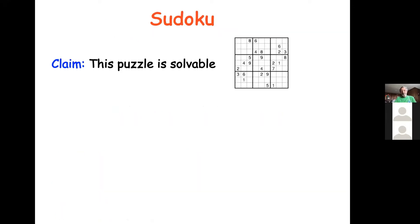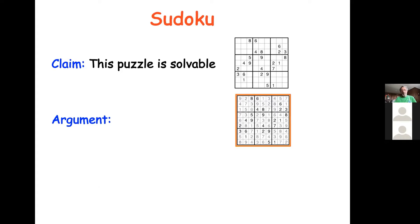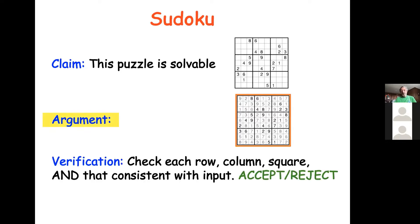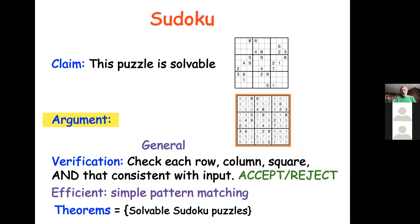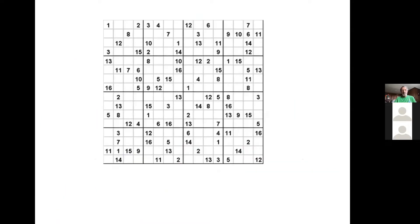Here's another example: Sudoku. The claim is that a particular puzzle is solvable. An argument is just filling in the empty squares according to the rules of Sudoku. To check the argument, you verify that all rows, columns, and small squares have different integers — basically pattern matching. The set of theorems in this proof system are the solvable Sudoku puzzles. You have to really think about Sudoku puzzles of n-by-n size; there are infinitely many instances.